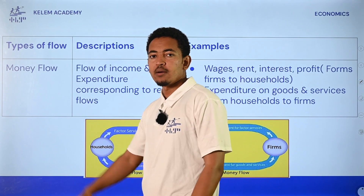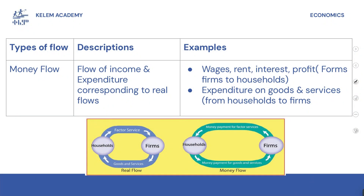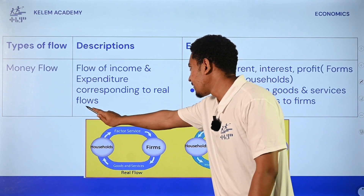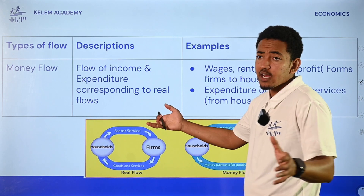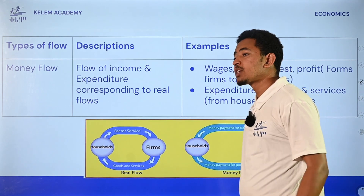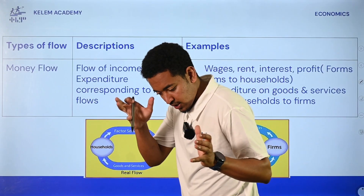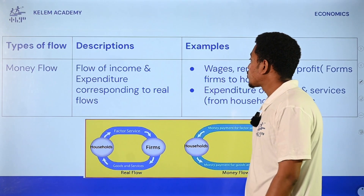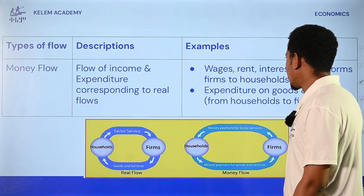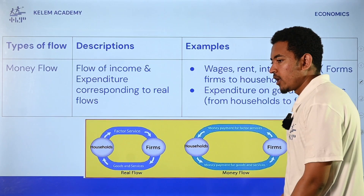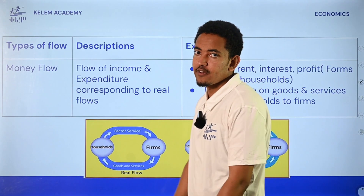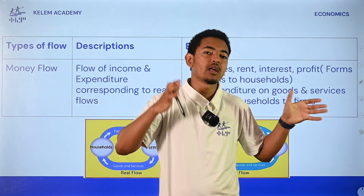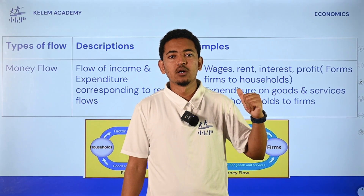Types of flows. This is the flow of income and expenditure corresponding to real flows. This flow is the flow of income and expenditure. Income and expenditure is the flow of income and expenditure. For example: wage, rent, interest, profit, and future income in the economy.